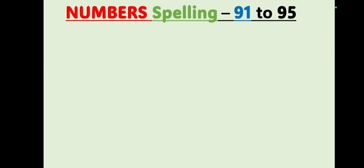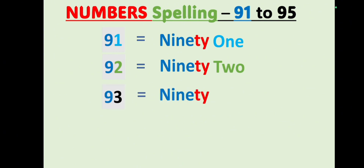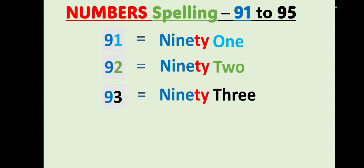Let's learn the numbers 91 to 95 with spelling. Say with me: 91 — N-I-N-E-T-Y, 90, O-N-E, 1 — 91. 92 — N-I-N-E-T-Y, 90, T-W-O, 2 — 92. 93 — N-I-N-E-T-Y, 90, T-H-R-E-E — 93.